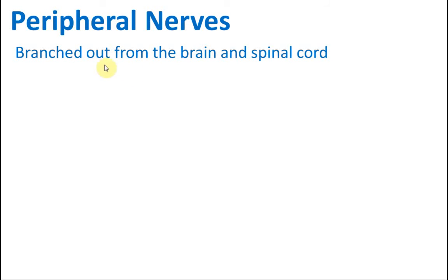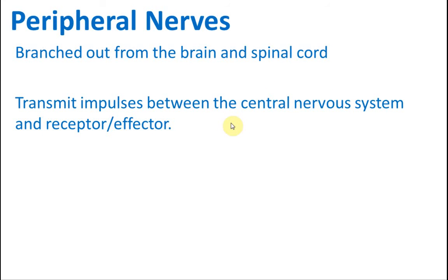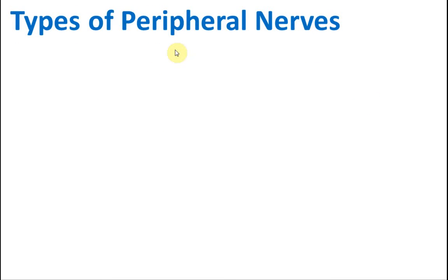The spinal cord controls the reflex reactions. The peripheral nerves are the nerves that branch out from the brain and the spinal cord, and their function is to transmit impulses between the central nervous system and the receptors or the effectors.